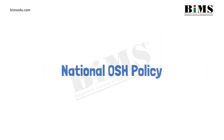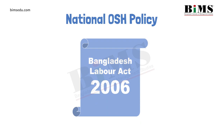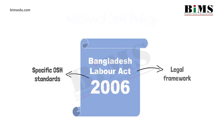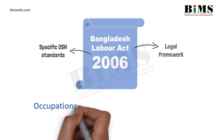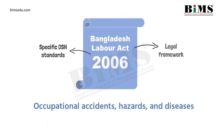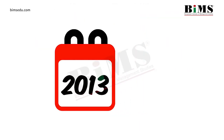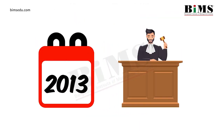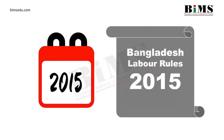In addition to national OSH policy, Bangladesh Labor Act 2006 also provides a legal framework for all employers. The Labor Act has many specific OSH standards. The act covers the rules to prevent occupational accidents, hazards, and diseases. In 2013, some important amendments were made to labor laws. Later, in 2015, Bangladesh Labor Rules 2015 was adopted.